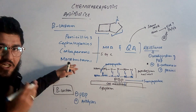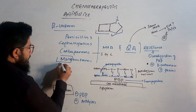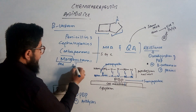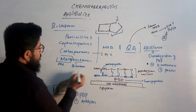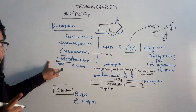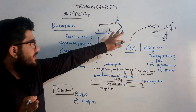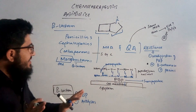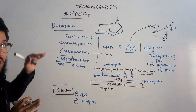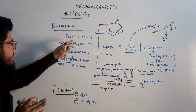Regarding the monobactams, the name indicates: 'mono' means one, and 'bactam' refers to the beta-lactam ring. So in monobactams we just have one beta-lactam ring that is free, with no attachment of the thiazolidine ring. That's a very simple understanding of the structure of beta-lactams.